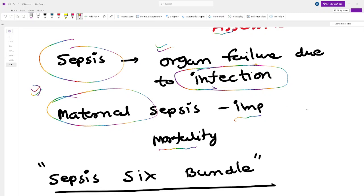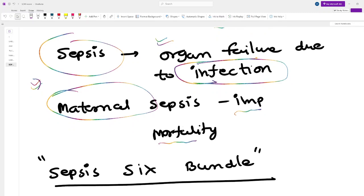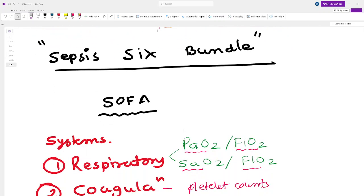All maternity services try to aggressively treat maternal sepsis. Something called Sepsis 6 Bundle - you can go and search about the Sepsis 6 Bundle. It's a treatment or initial plan.